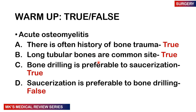Coming back to our warm-up question: In acute osteomyelitis — A) there is often a history of bone trauma: TRUE. B) Long tubular bones are common sites: TRUE. C) Bone drilling is preferred to saucerization: TRUE — we drill into the bone rather than removing large chunks. D) Saucerization is preferable to bone drilling: FALSE.